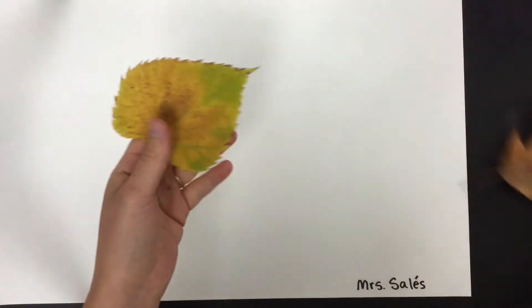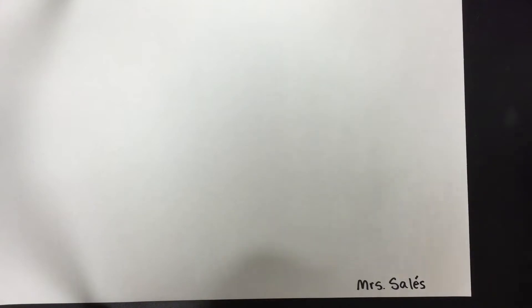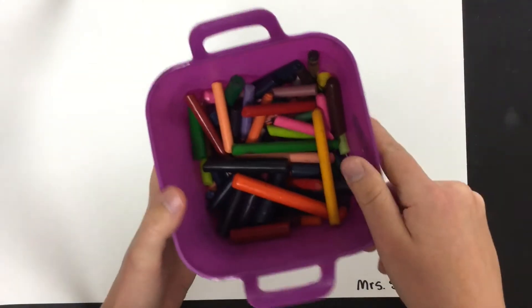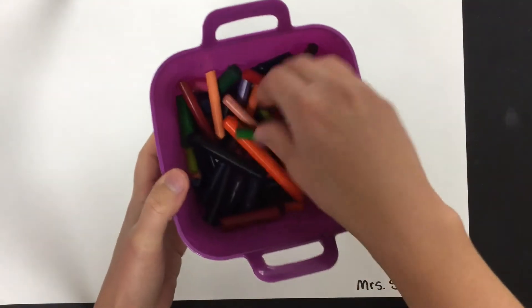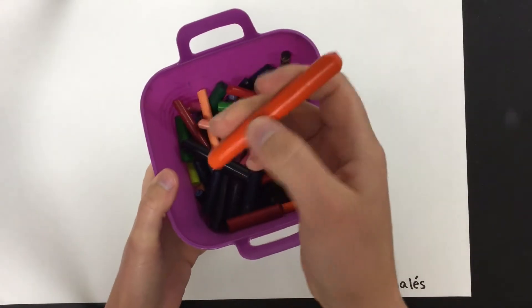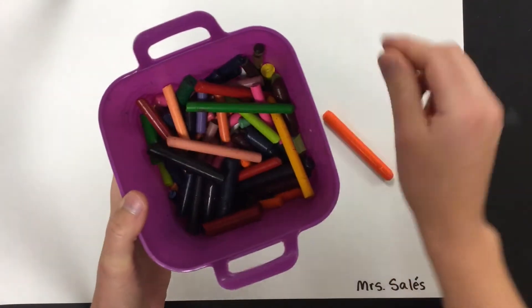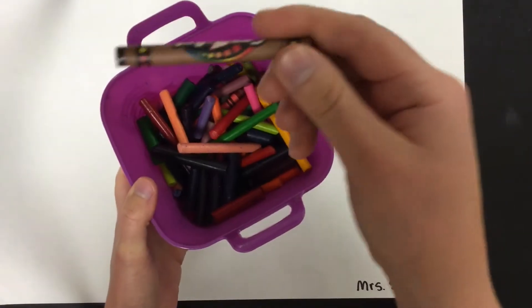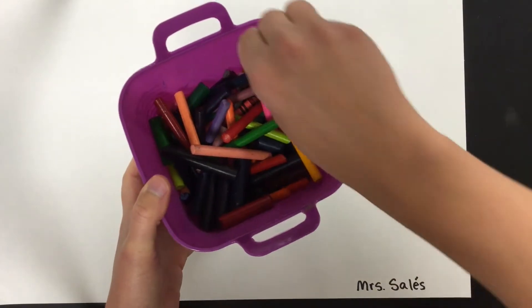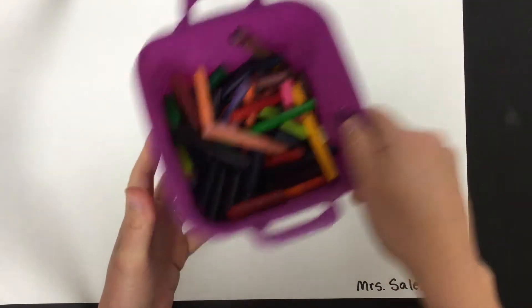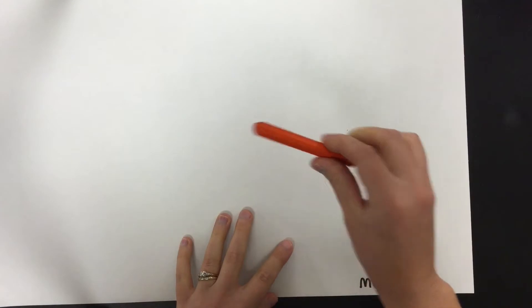Please be very careful with the leaves because they are breakable and we want other students to use them too. Go ahead and pick out a crayon. Your crayon must not have paper around it. This crayon doesn't have any paper, this one does, so don't choose any crayons with paper on them. We want our crayons to be completely bare for this project.